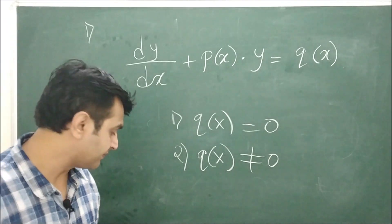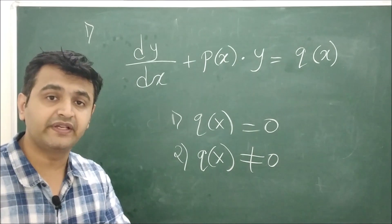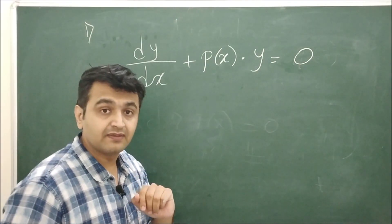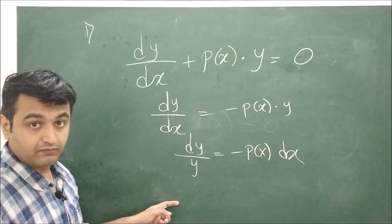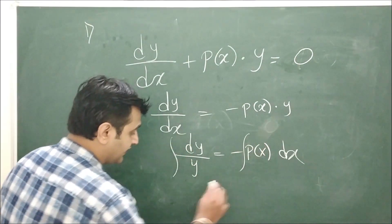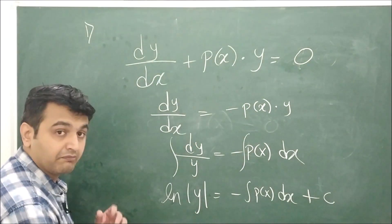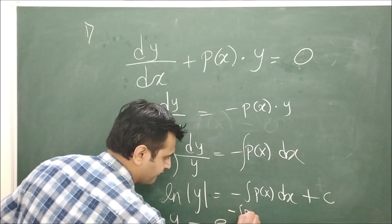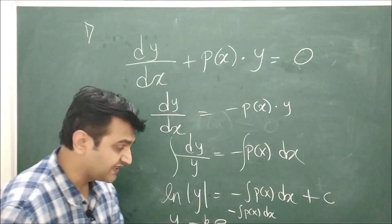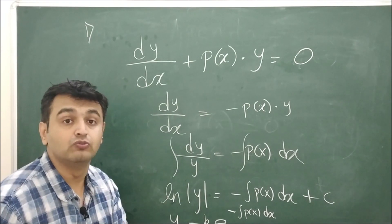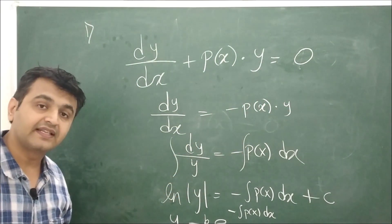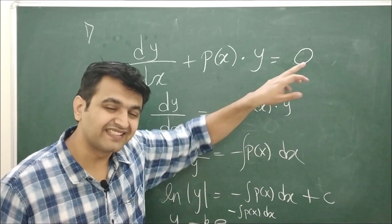If the equation is homogeneous, it is easy to solve using variable separable. When Q(x) = 0, we bring P(x)·y to the left side, separate variables — left side contains only y, right side only x — and integrate both sides. This gives ln(y) = integral of P(x) dx, so y = K·e^(integral of P(x) dx), where K is a constant.